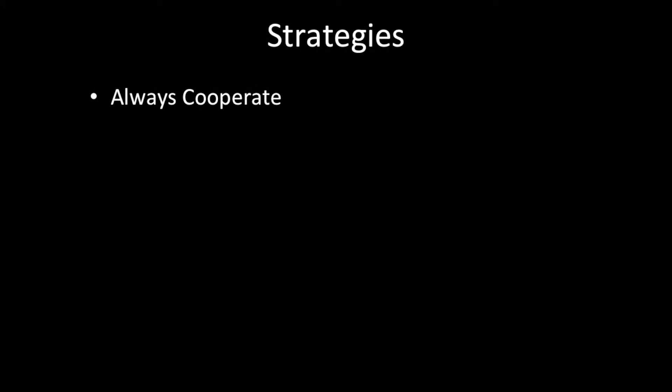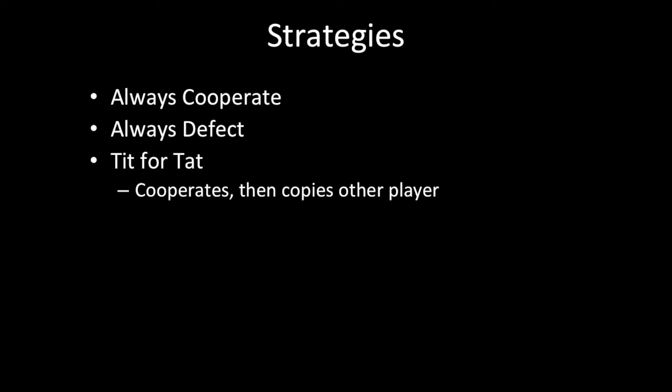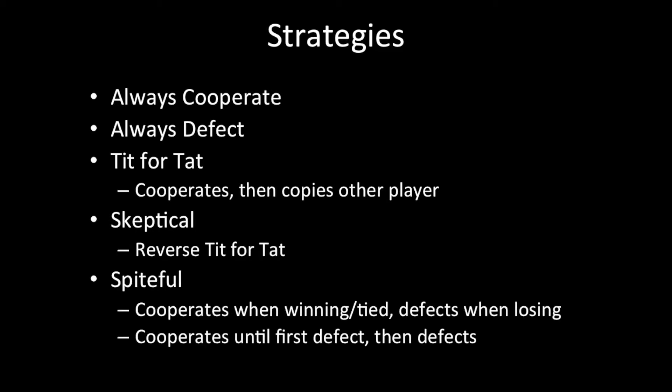There were 5 or 6 different strategies depending on how you looked at it. A player could always cooperate or always defect. Tit for tat was the most common method — a player cooperates the first time and then copies the other player's previous move. Then there's skeptical, which is the reverse of tit for tat, where the player defects first and then copies the other player. Then there's spiteful, which can be described either as cooperating when winning or tied and defecting when losing, or cooperating until the first defect and then defecting the rest of the time. These are completely different strategies, but people disagree about which definition is correct.